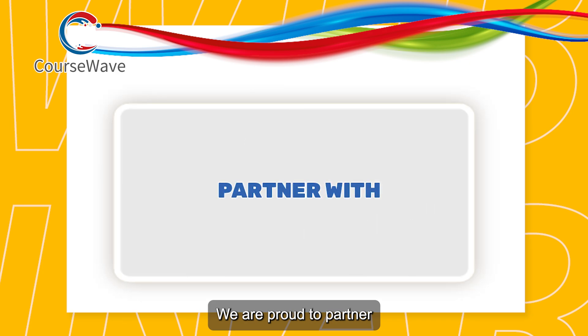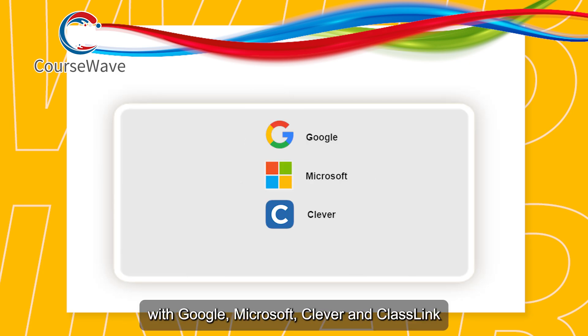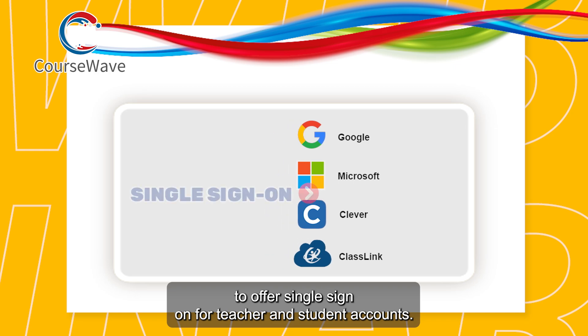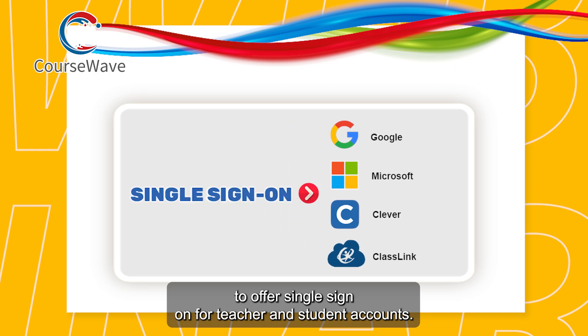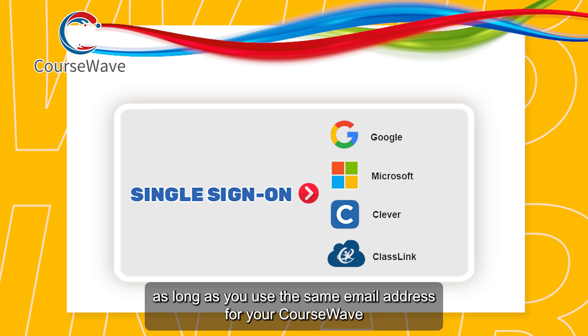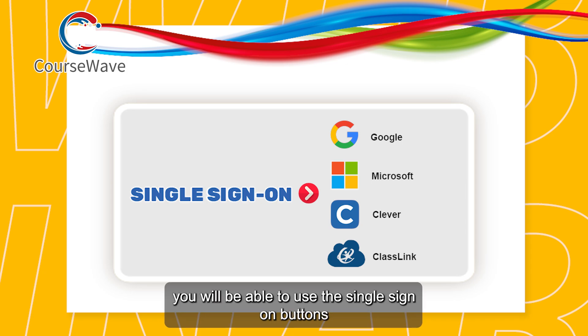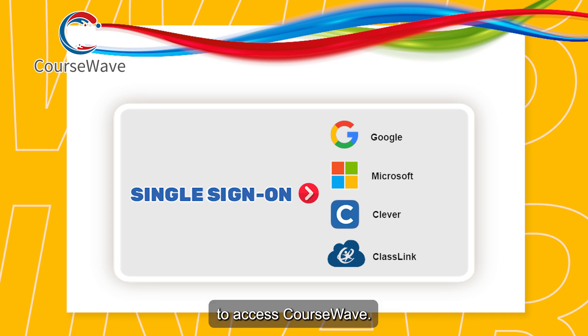We are proud to partner with Google, Microsoft, Clever, and ClassLink to offer single sign-on for teacher and student accounts. We use email addresses as identifiers. As long as you use the same email address for your CourseWave account that you do for our partners, you will be able to use these single sign-on buttons to access CourseWave.